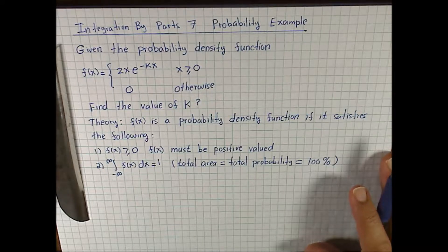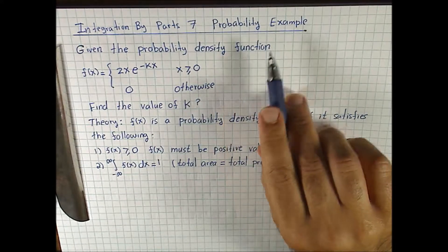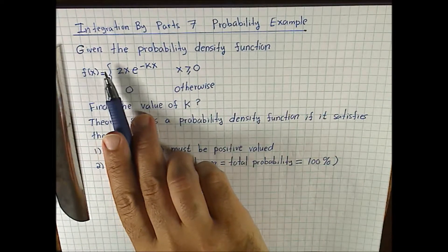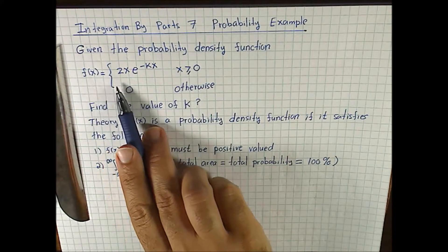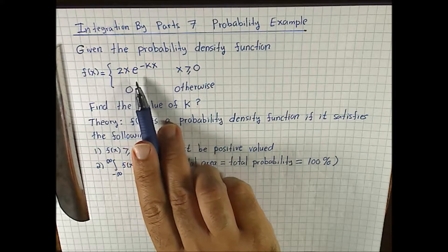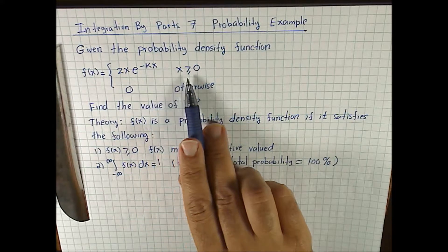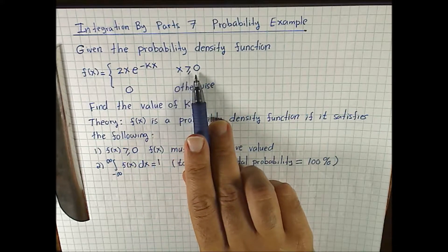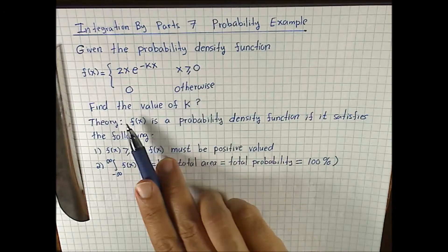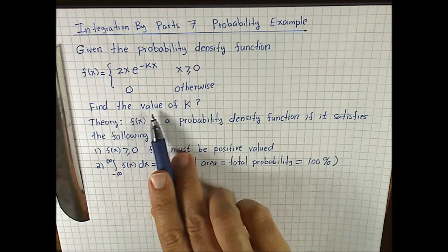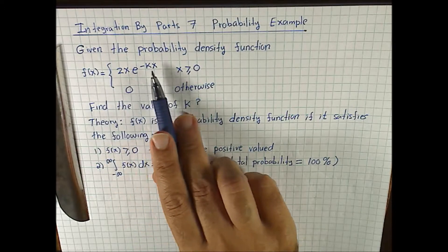Integration by Parts, example 7. This is a probability example. Given the probability density function f equal to 2x e to the negative kx when x is positive, and 0 when x is negative, find the value of k that makes this function a probability density function.